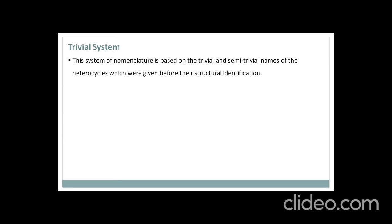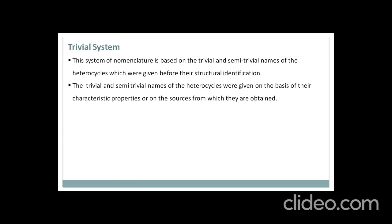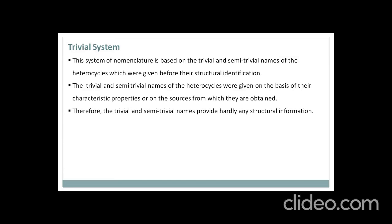Let's begin with the introduction of the trivial system. This system of nomenclature is based on the trivial and semi-trivial names of the heterocycles, which were given before their structural identification. The trivial and semi-trivial names of the heterocycles were given on the basis of their characteristic properties or on the sources from which they are obtained. Therefore, the trivial and semi-trivial names provide hardly any structural information.